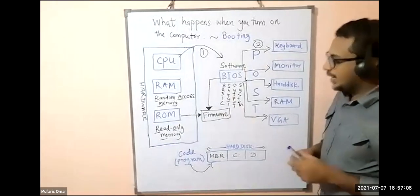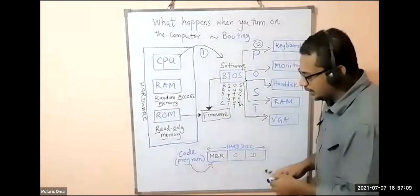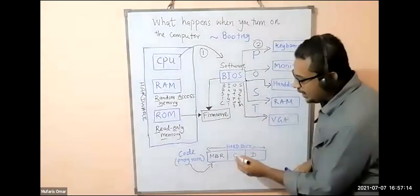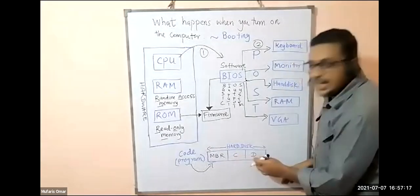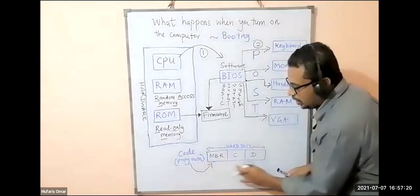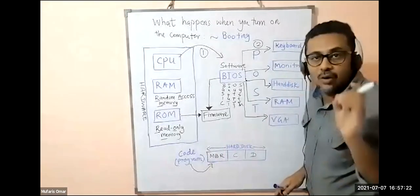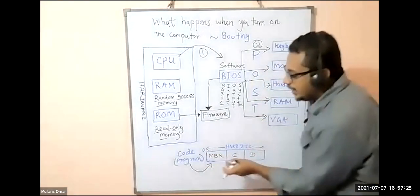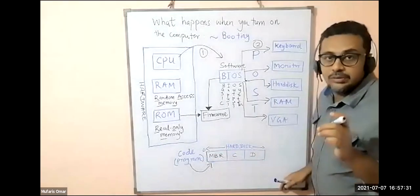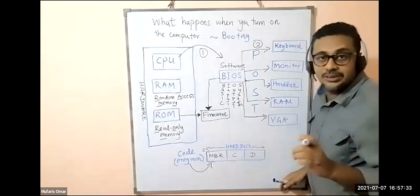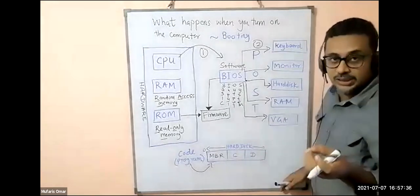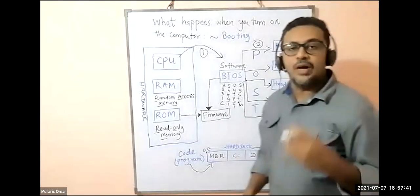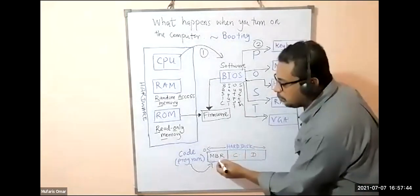Now third step. BIOS will come to this one, the bottom one. This is your hard drive. You have C partition or C drive, D, E, F. This whole thing is the hard drive. The initial part, the initial sector—the manufacturers have stored a program when they install Windows.